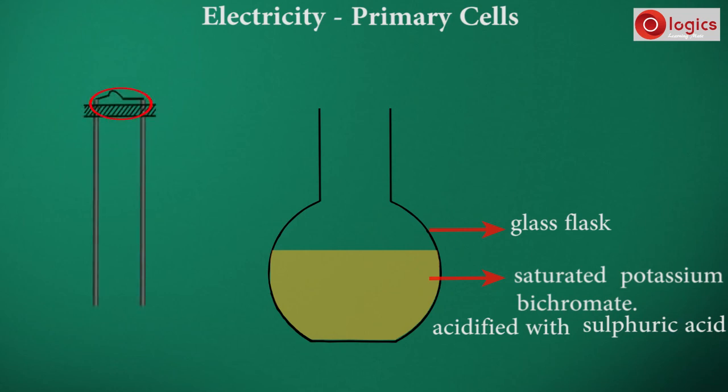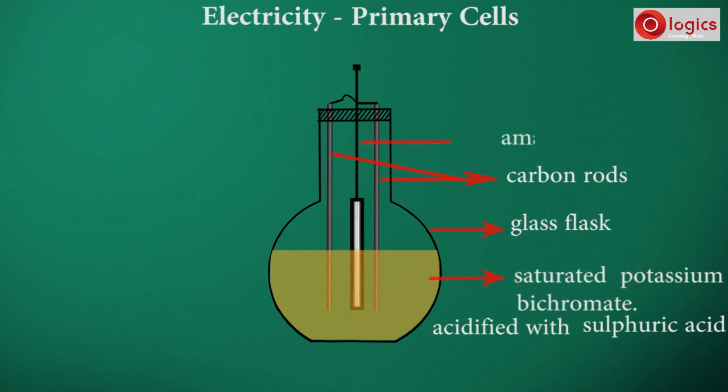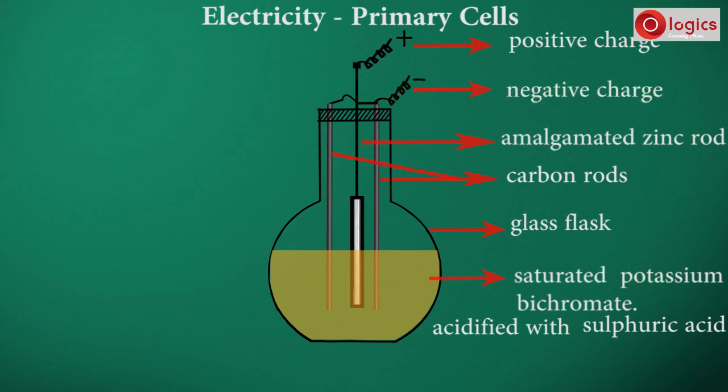The two interconnected carbon rods are fitted tightly in the flask with cork. Between the two carbon rods, an amalgamated zinc rod is lowered, which can be pulled up from the bichromate solution whenever needed. Here, amalgamated zinc rod gives positive charge, and connected carbon rods give negative charge.